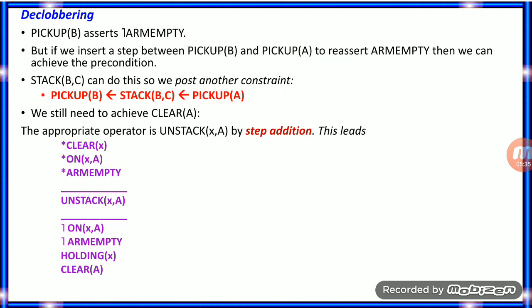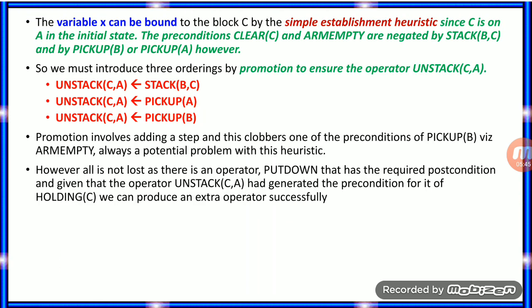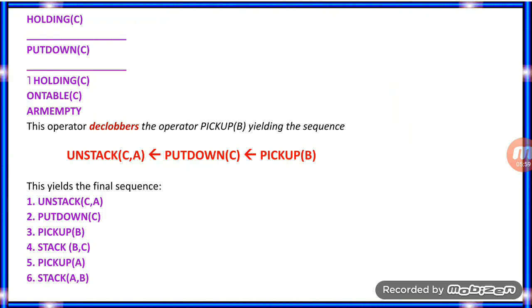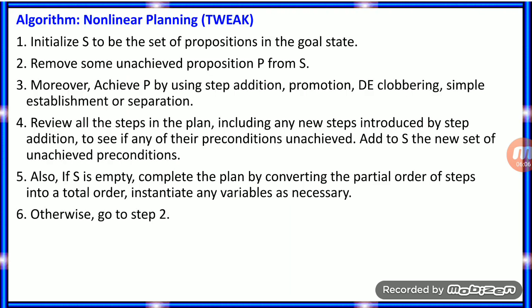Using step addition with operator unstack(X, A), one additional step is added. That variable X is bound using the simple establishment heuristic. Three orderings are produced to ensure the operator unstack(C, A) executes correctly. The final sequence is unstack(C, A) to stack(A, B), achieving the goal state. This is the algorithm followed in non-linear planning.